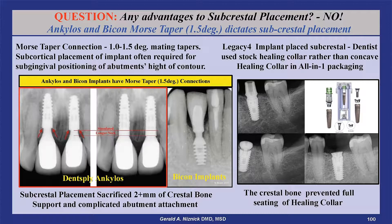A recent study by Selena et al. in the International Journal of Oral Implantology 2019, volume 12, confirmed that placing an implant 1.5 millimeters subcrestal compared to only 0.5 millimeters demonstrated no improvement in aesthetics or clinical difference in bone loss. Doing so can obviously complicate attachment of healing collars and abutments.